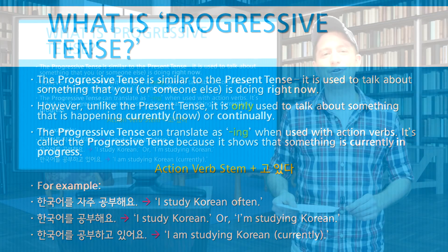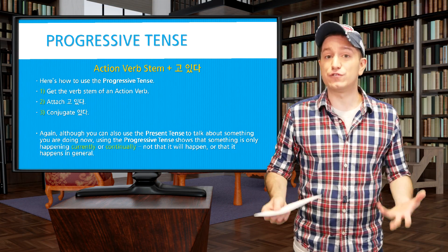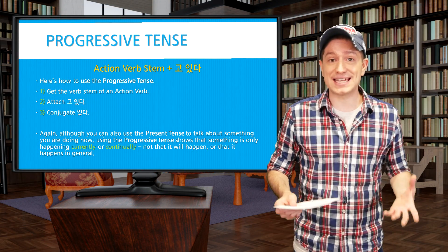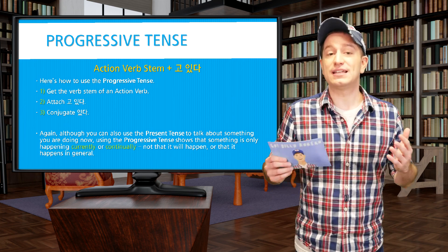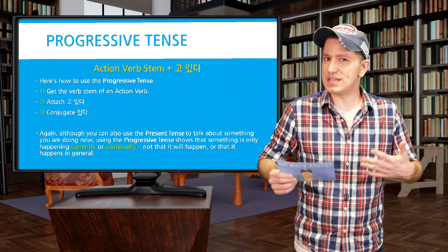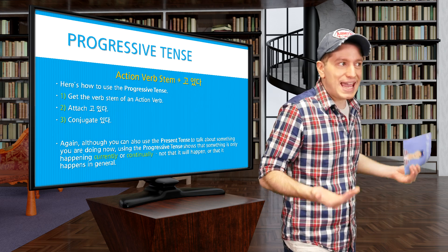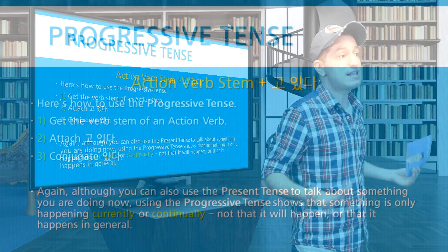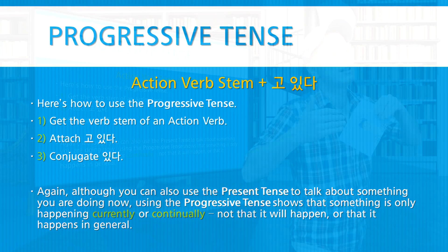Here's how to conjugate the progressive tense. Simply take an action verb stem and attach 고 있다, then conjugate the verb 있다 — so this can be 있어요. Again, although you can also use the regular present tense to say that something is happening, the progressive tense is only used to say that something is currently or continually happening.